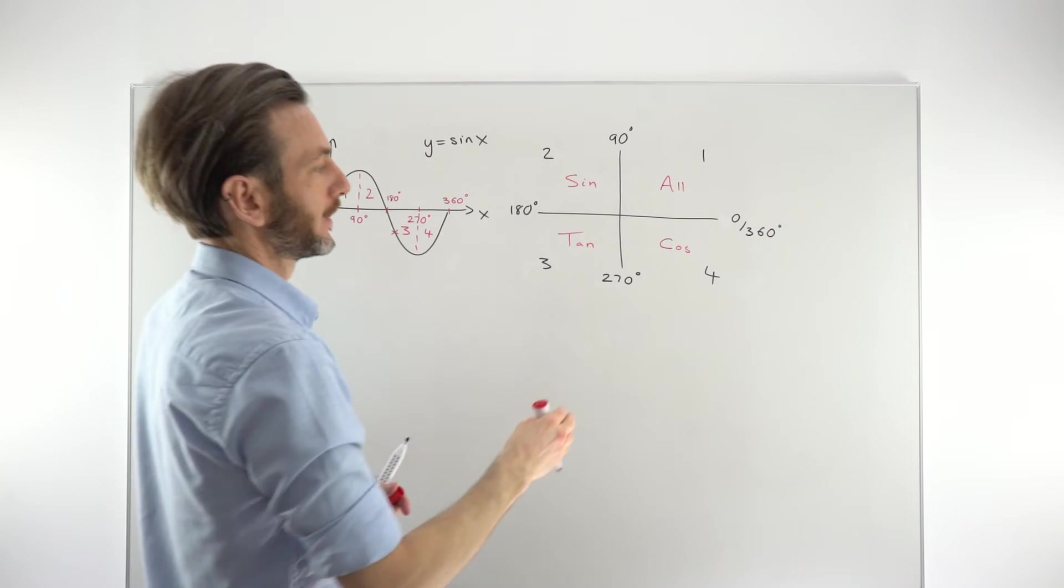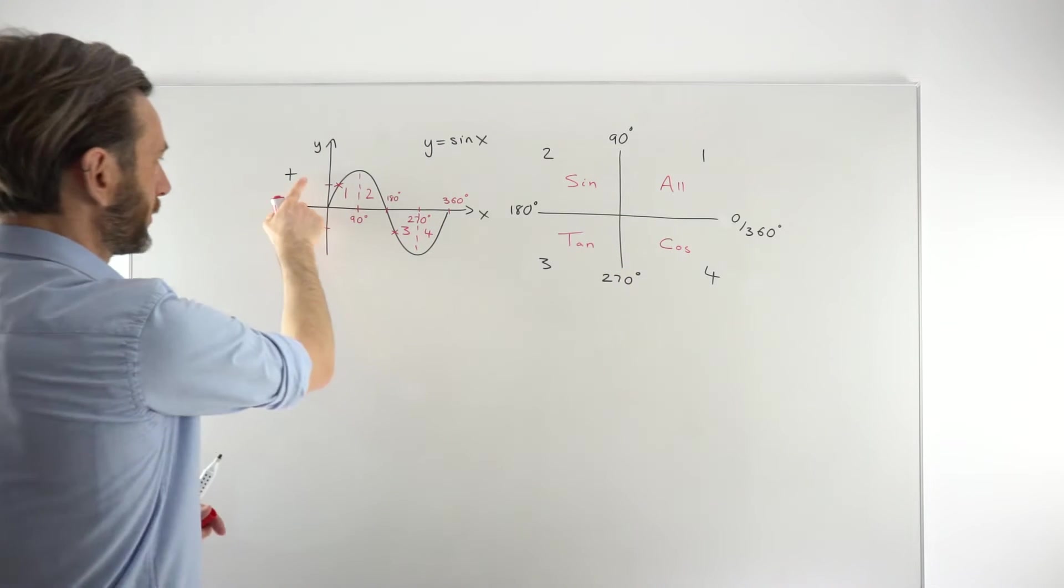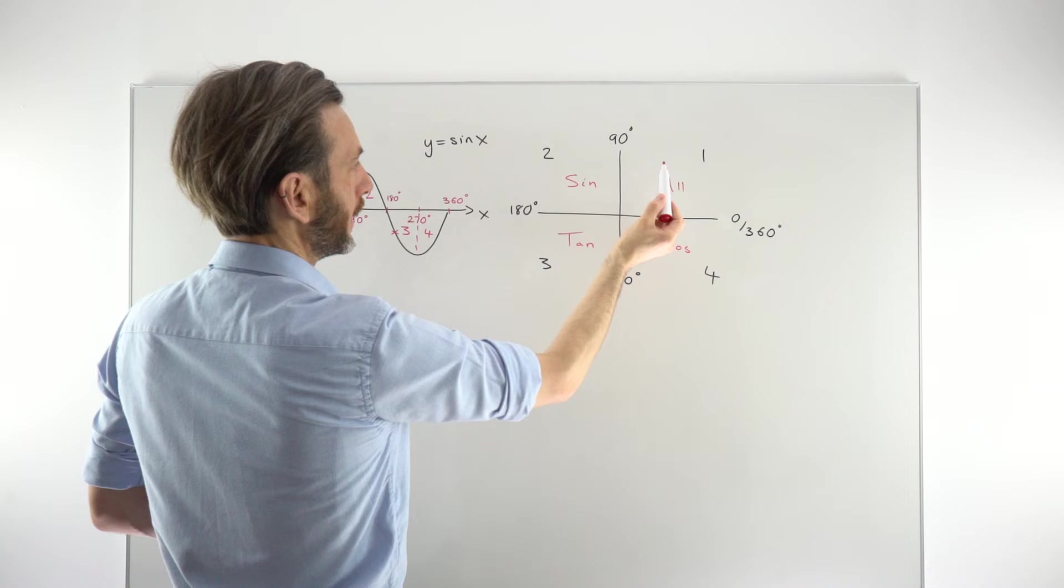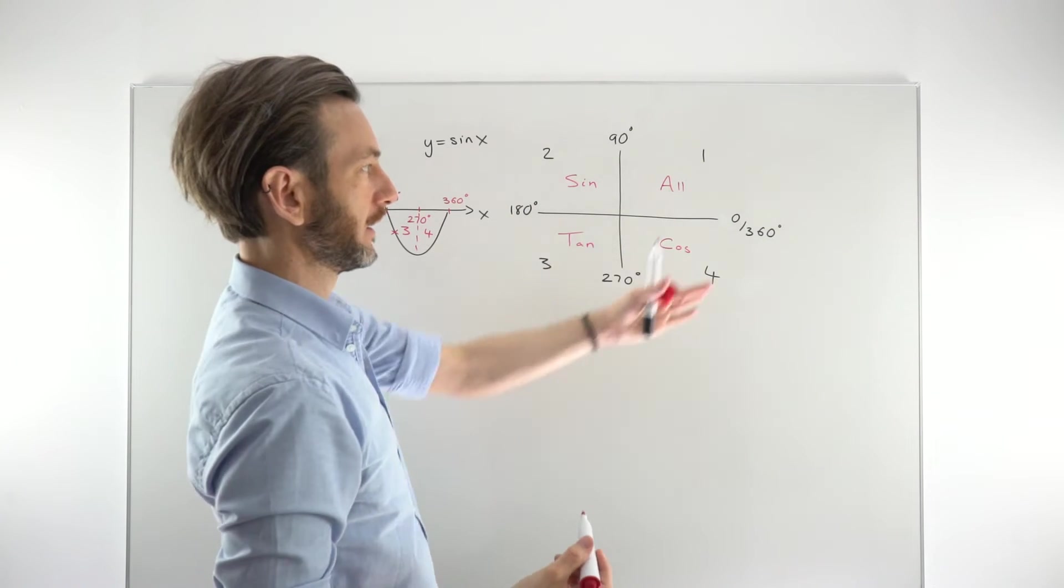But what does it tell us about it? Well, what it tells us about each of the functions is that they're positive. They've got a positive value in their own quadrant. So here, in quadrant 2, sine is positive, according to the CAST diagram.